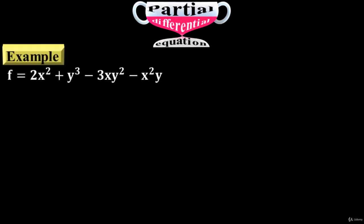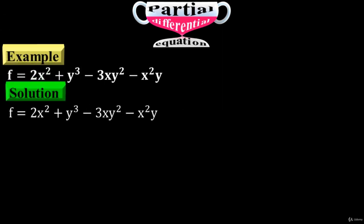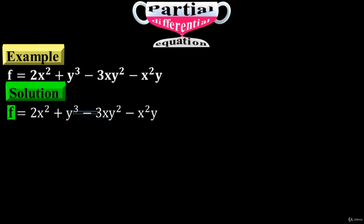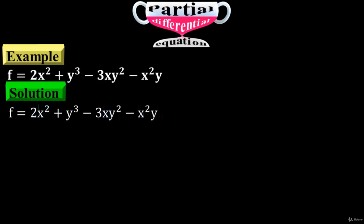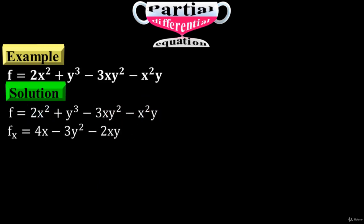Example: f equals 2x squared plus y cubed minus 3x times y squared minus x squared times y. Differentiate f with respect to x first. x variables exist in three places, so just differentiate these terms with respect to x to have f sub x equals 4x minus 3y squared minus 2xy.